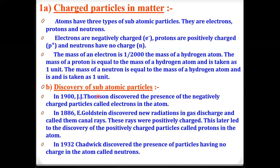Regarding the discovery of subatomic particles: in 1900, J.J. Thomson discovered negatively charged particles called electrons using a cathode ray tube experiment. In 1886, E. Goldstein discovered new radiation in a gas discharge and called them canal rays, which led to the discovery of positively charged particles — later identified as protons. In 1932, J. Chadwick discovered particles with no charge in the atom, which are termed neutrons.